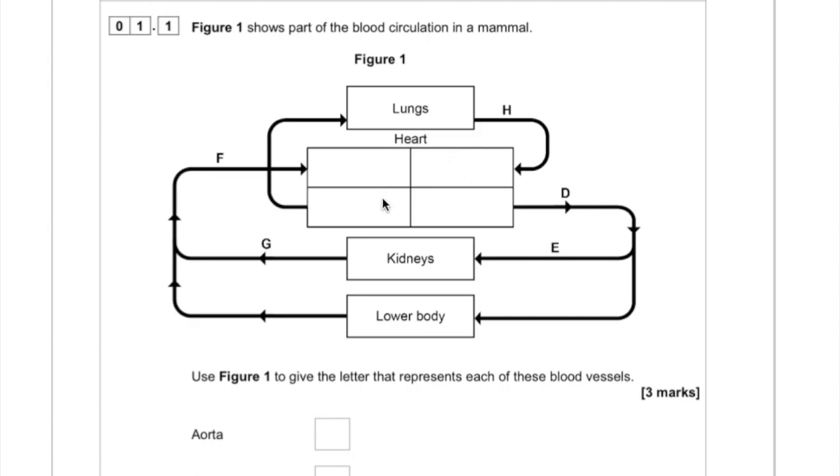So let's just talk through circulation in a mammal. Here we've got the heart divided into two sides. We've got the right side, which we see as the left side, and the left side, which we see as the right side. And then we've got the atria at the top and the ventricles at the bottom.